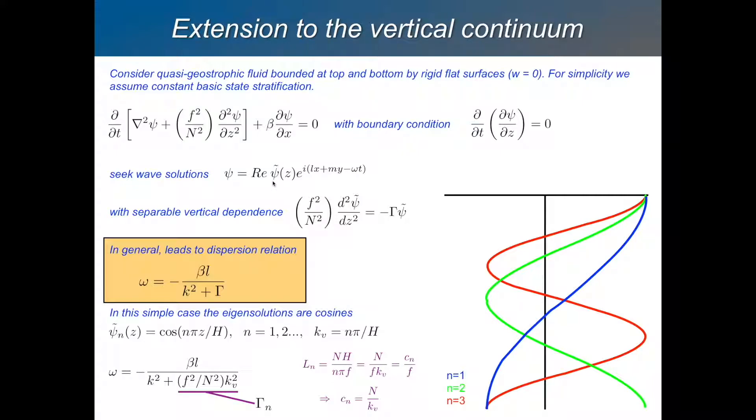So then you'll still have to solve that, right? So to simplify things, we'll make what we call the separable dependence assumption, where we say that this term here can be represented as a linear term in the stream function. So this equation then will give us the structures that we have in the vertical, and then this equation will give us the dispersion relation for the Rossby wave. If we just substitute that in here.